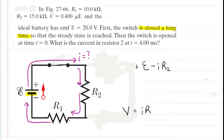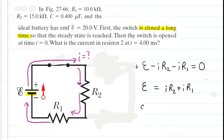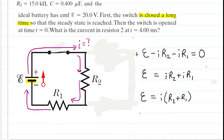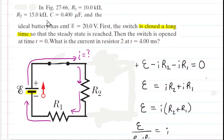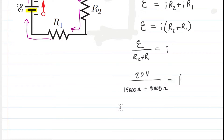Continuing clockwise, same story — I encounter another resistor, another potential drop: minus I times R1. When I return to the negative terminal of the battery, Kirchhoff's loop rule says to set those potential changes equal to zero. Adding the negative IR terms to the other side, factoring out the current, and dividing both sides by the parenthetical term gives the current. The question gives E and the resistance values in kilohms for both R1 and R2, so we multiply by 1000 to convert to ohms. When we compute that, we get 8×10⁻⁴ amps — that is how much current is flowing through the circuit.